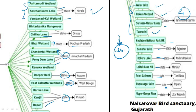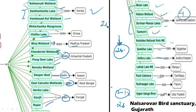Uttar Pradesh has the Upper Ganga River as a Ramsar wetland. The 26th wetland was added in 2012 — that is Nalsarovar Bird Sanctuary in Gujarat. So these are the 26 wetlands recognized under the Ramsar Convention as Ramsar sites, all internationally recognized.